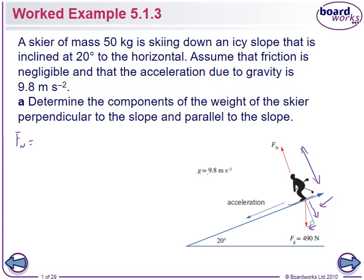So, Fn is equal to Fg cos theta. So, this kindly gives us Fg. That makes life much easier. So, 490 times the cos of 20. What do we get? 460.45. So, that's the component of the weight force in the direction perpendicular to the slope.